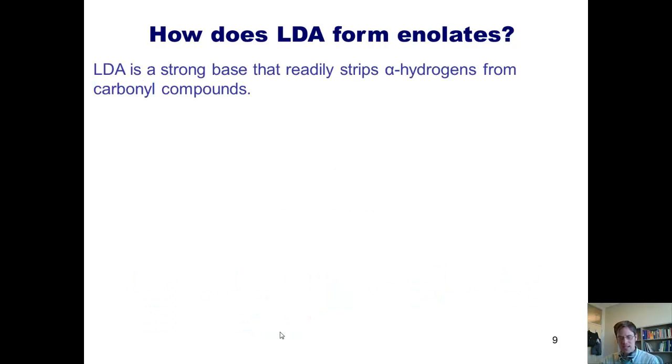Let's compare the basicity of LDA with that of hydroxide. If I have a carbonyl compound like cyclohexanone and I react that with hydroxide, you will note that there might be some minor removal of one of these alpha hydrogens. So let's pretend this hydroxide removes an alpha hydrogen, gives me this enolate, which exists in these two resonant structures. When that hydroxide removes the hydrogen from this alpha position, it becomes water, which is the conjugate acid of the hydroxide.